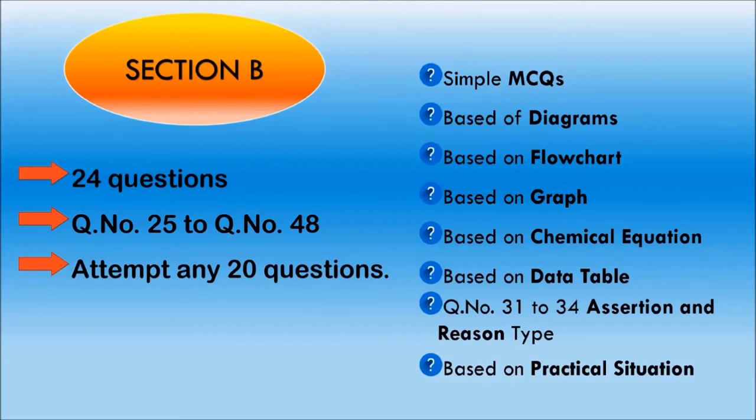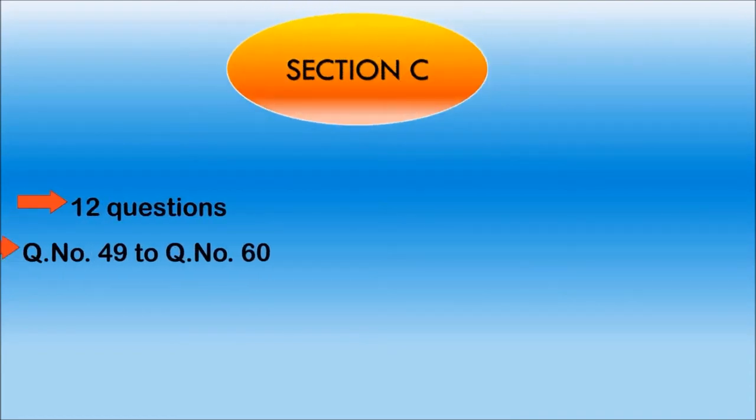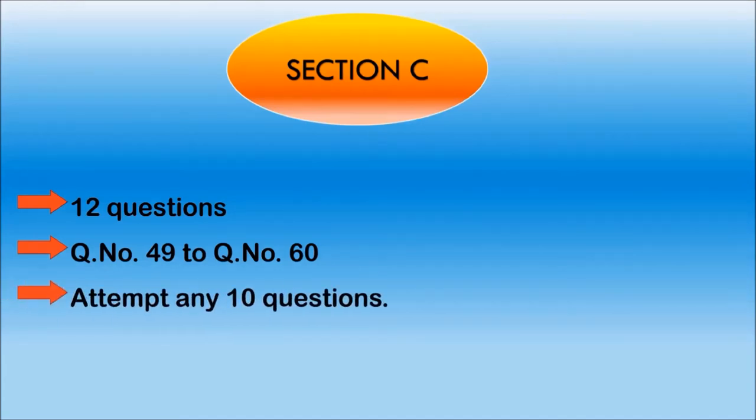So, these are the type of questions you will see in Section B. Now, come to Section C. In Section C, you will have 12 questions. These questions are from question number 49 to 60, out of which you have to attempt any 10 questions. So, you can see choice is provided in every section: choice for four questions in Section A, choice for four questions in Section B and the choice of two questions in Section C.